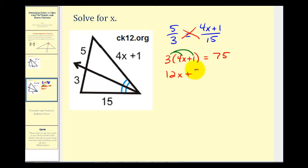So we'll have 12X plus 3 equals 75, subtract 3 on both sides. 12X equals 72, divide both sides by 12. So we have X equals 72 divided by 12, that would be 6.